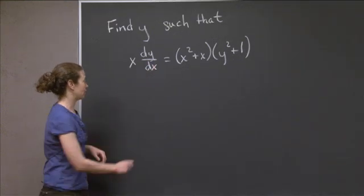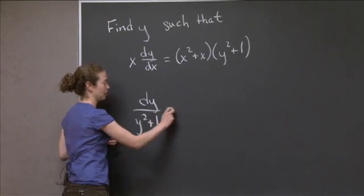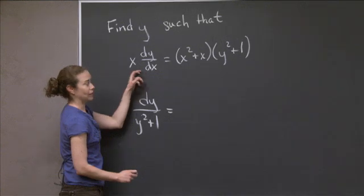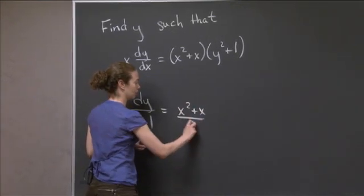So I'm going to write dy divided by y squared plus 1 equals, multiplying through by dx divided by x, I'm going to get x squared plus x over x dx.